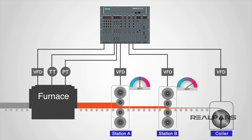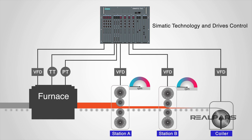Similarly, if Station A had to stop quickly — an emergency situation for example — the motors on Station B would also stop quickly, removing the potential to put excess stress on those motors. The high-precision nature of some processes requires the highest degree of performance, and that is what you get with SIMATIC Technology and Drives Control. Powerful motion and closed-loop control are where it excels.